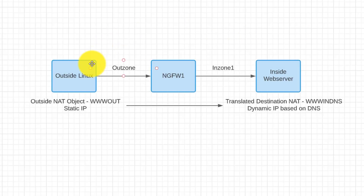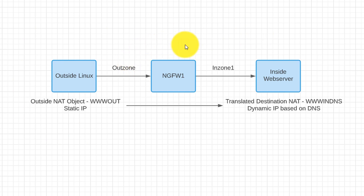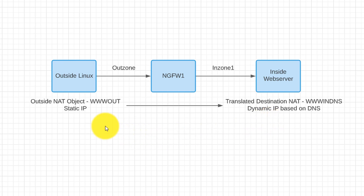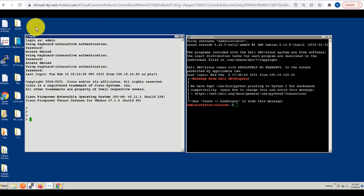In my setup, I have an outside Linux box with a static IP and a Firepower Threat Defense 7.1 device named ngfw1 with two interface zone objects: out zone and in zone 1. In addition, I have a side web server that we will try to reach from outside using FQDN objects. For my scenario, I will try to reach from outside NAT object www.out to the translated destination NAT address named www.indns that I will create using Firepower Management Center. I have two SSH PuTTY console sessions active — one for my FTD device named ngfw1 and the other for my outside Linux box.